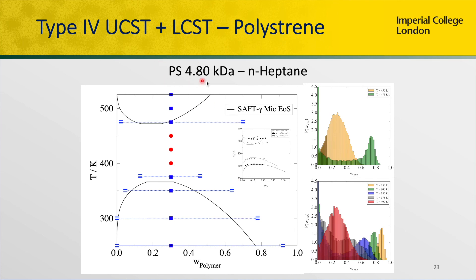We take the same polystyrene and put it in N-heptane instead of N-hexane. N-heptane is slightly more miscible with polystyrene, and we get a type 4 phase behaviour — unimodal and bimodal distributions — again with excellent agreement with simulations.